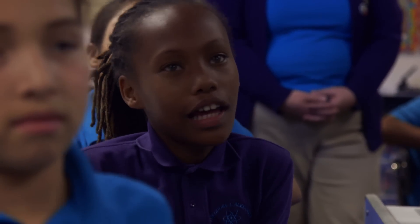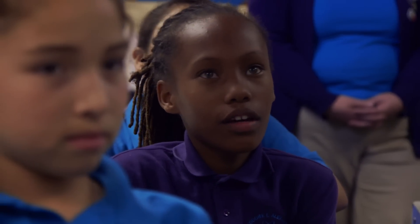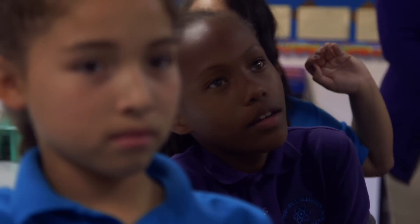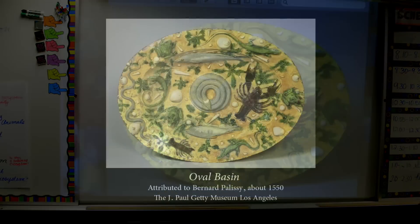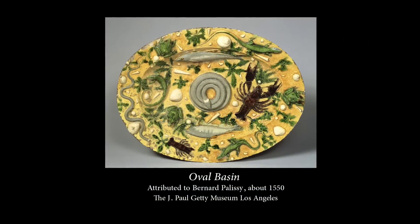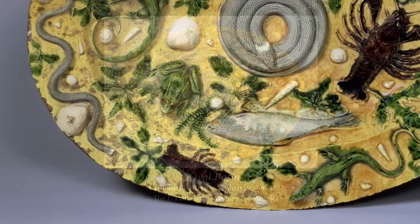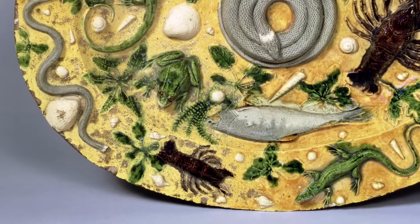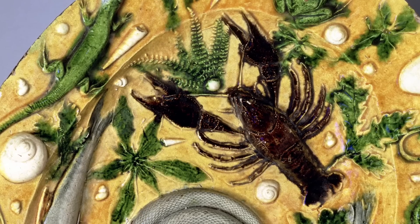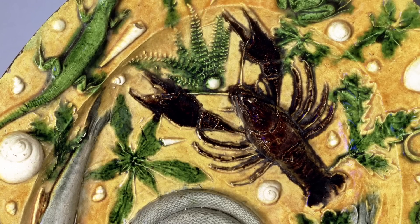What do you see here? It's a plate that someone decorated. I think that they were thinking of animals. The learning objective is that students make claims about the health of an ecosystem based on our observation of an art piece — an oval basin created in the 16th century by Bernard Palizzi. It's actually live-casted, so the objects on it were made from molds of actual animals. That's always intriguing to the students.